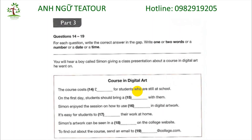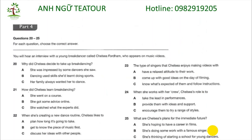That is the end of Part 3. Now turn to Part 4, questions 20 to 25. For each question, choose the correct answer. You have 45 seconds to look at the questions for Part 4.